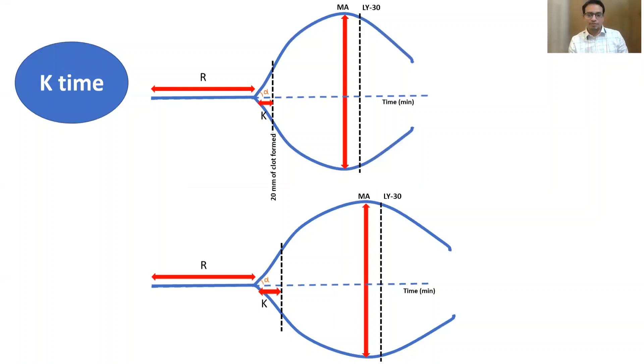Now let's understand the K time. K time will tell you how fast a clot is formed, the speed of clot formation. Normal range of K time is three to six minutes. If it is more than six minutes, that indicates there is inadequate fibrinogen and it is treated with either fibrinogen concentrate or cryoprecipitate. So if the K time is prolonged, you have to treat it with fibrinogen concentrate or cryoprecipitate.